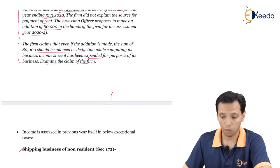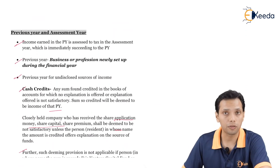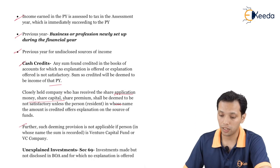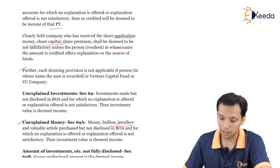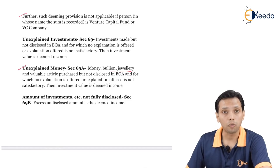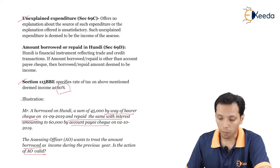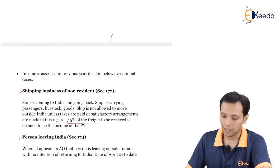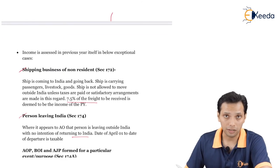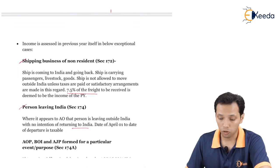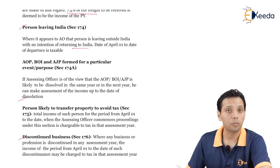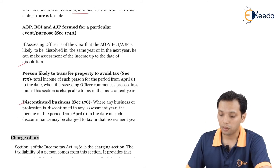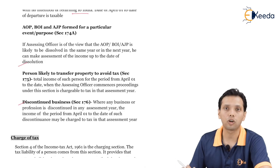To summarize, in this topic we covered the concept of previous year and assessment year and the exceptions. The exceptions for undisclosed sources of income include cash credits, unexplained investments, unexplained money, amounts of investments not fully disclosed, unexplained expenditure, amounts borrowed or repaid on hundi, and section 115BBE. Cases where income is taxed in the previous year itself include: shipping business of a non-resident, person leaving India, AOP/BOI formed for a particular event or purpose, person likely to transfer property to avoid tax, and discontinued business.